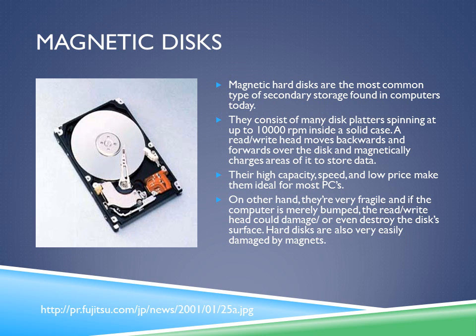Magnetic hard disks are the most common type of secondary storage found in computers today. They consist of many disk platters spinning at up to 10,000 RPM inside a solid case. A read-write head moves backwards and forwards over the disk and magnetically charges areas of it to store data. Their high capacity, speed, and low price make them ideal for most PCs. However, they're very fragile — if the computer is merely bumped, the read-write head could damage or destroy the disk surface. Hard disks are also very easily damaged by magnets, which is why many portable devices use solid-state storage instead.